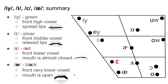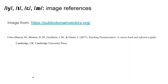This is the conclusion of my presentation. A quick summary: For green E, it's a front high vowel — said with spread lips. For silver E, it's a front middle vowel — relaxed lips. For red E, it's a front lower vowel — mouth is almost closed. For black A, it's front and very low, the lowest front vowel, and the mouth is open. These are my image references — I used the vowel quadrant from Celsius Mercia, and the images are public domain vectors. If you have any thoughts, questions, or concerns, please email me. I hope you enjoyed this.